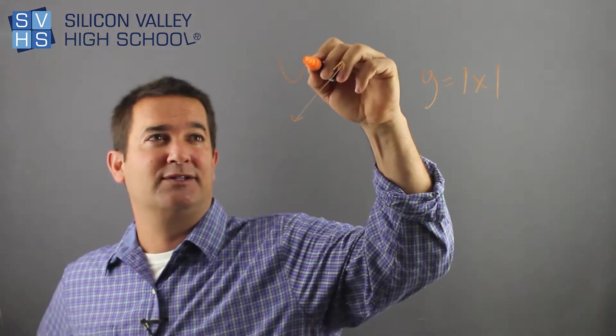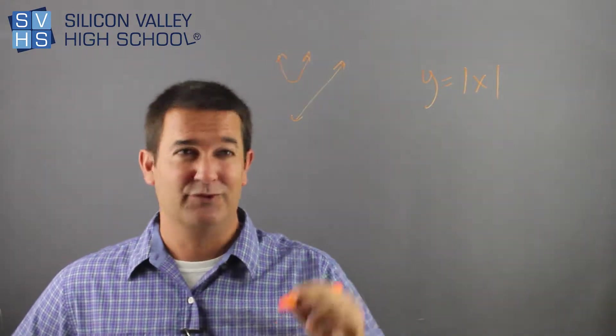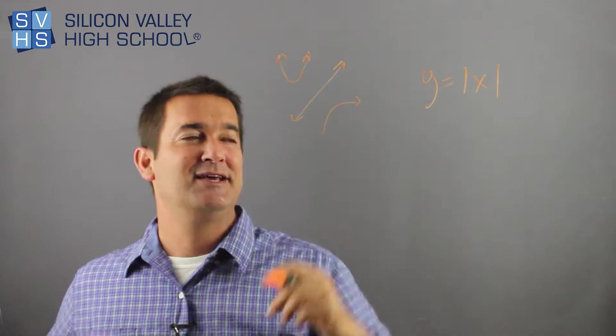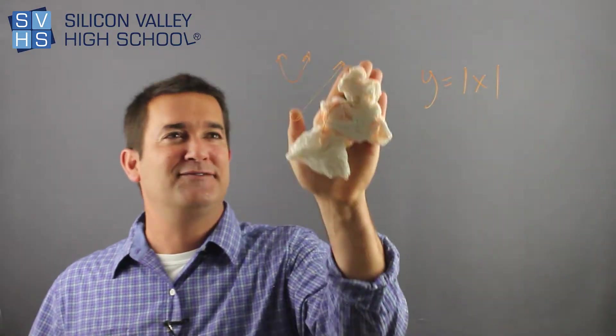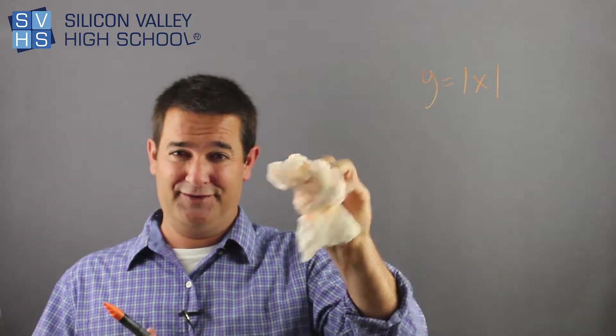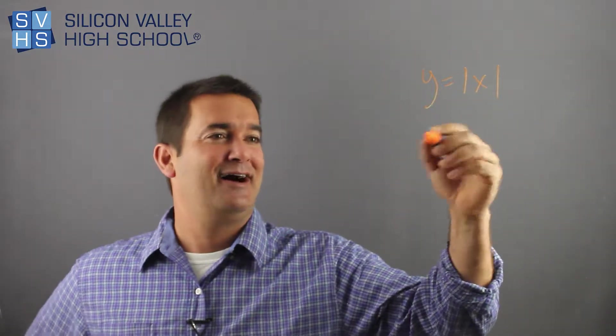You've graphed parabolas, probably, which look like this. Maybe you've done some root functions, which look kind of weird, like this. But the cool thing about absolute value functions is they make a perfect, beautiful, in my estimation, V.